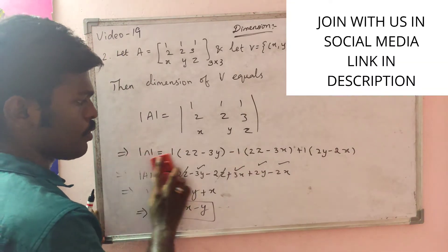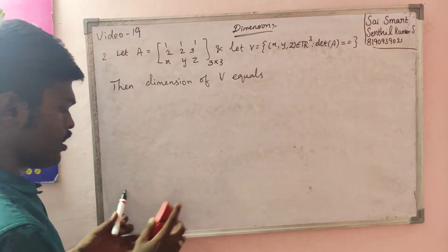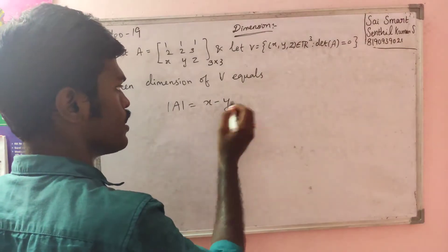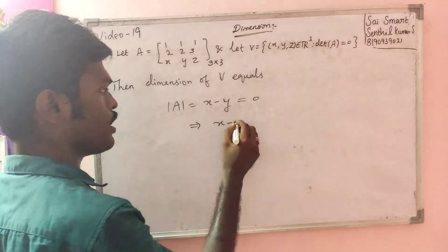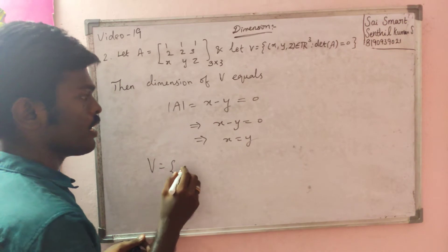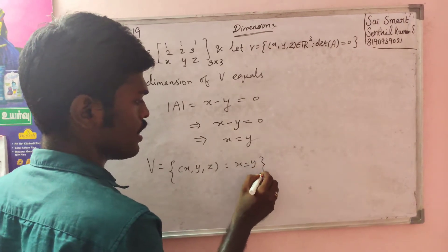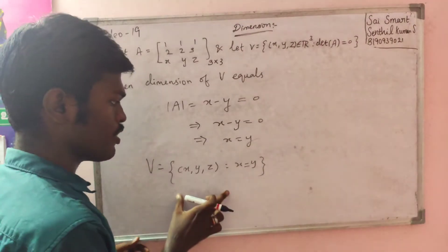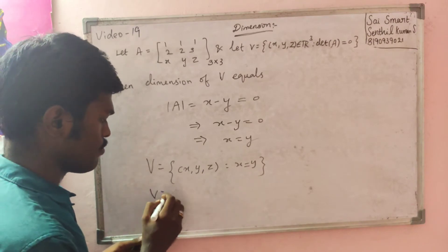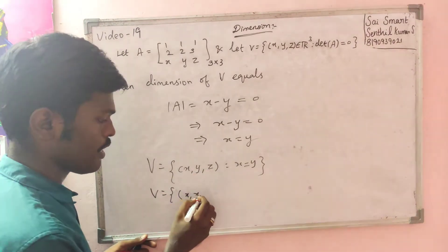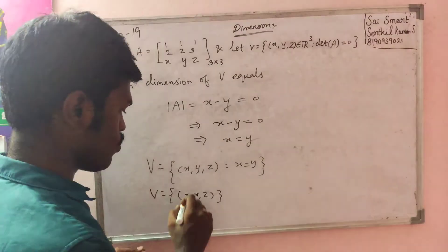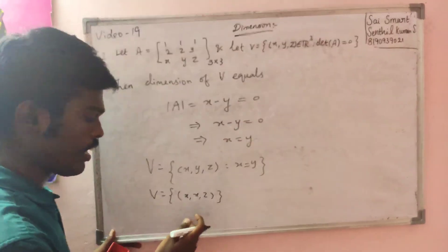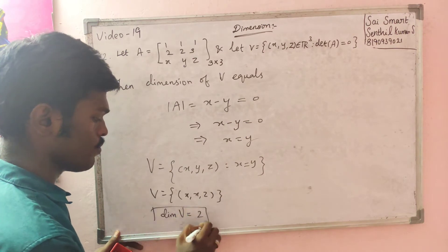The determinant of A equals zero means x minus y equals zero, which simply gives x equal to y. Now the set is: x, y, z such that x equal y. The determinant equal to 0 gives x equal to y. We simplify this. X is equal to 0 gives us that x and z are linearly independent variables. Therefore, the dimension of V is equal to 2.